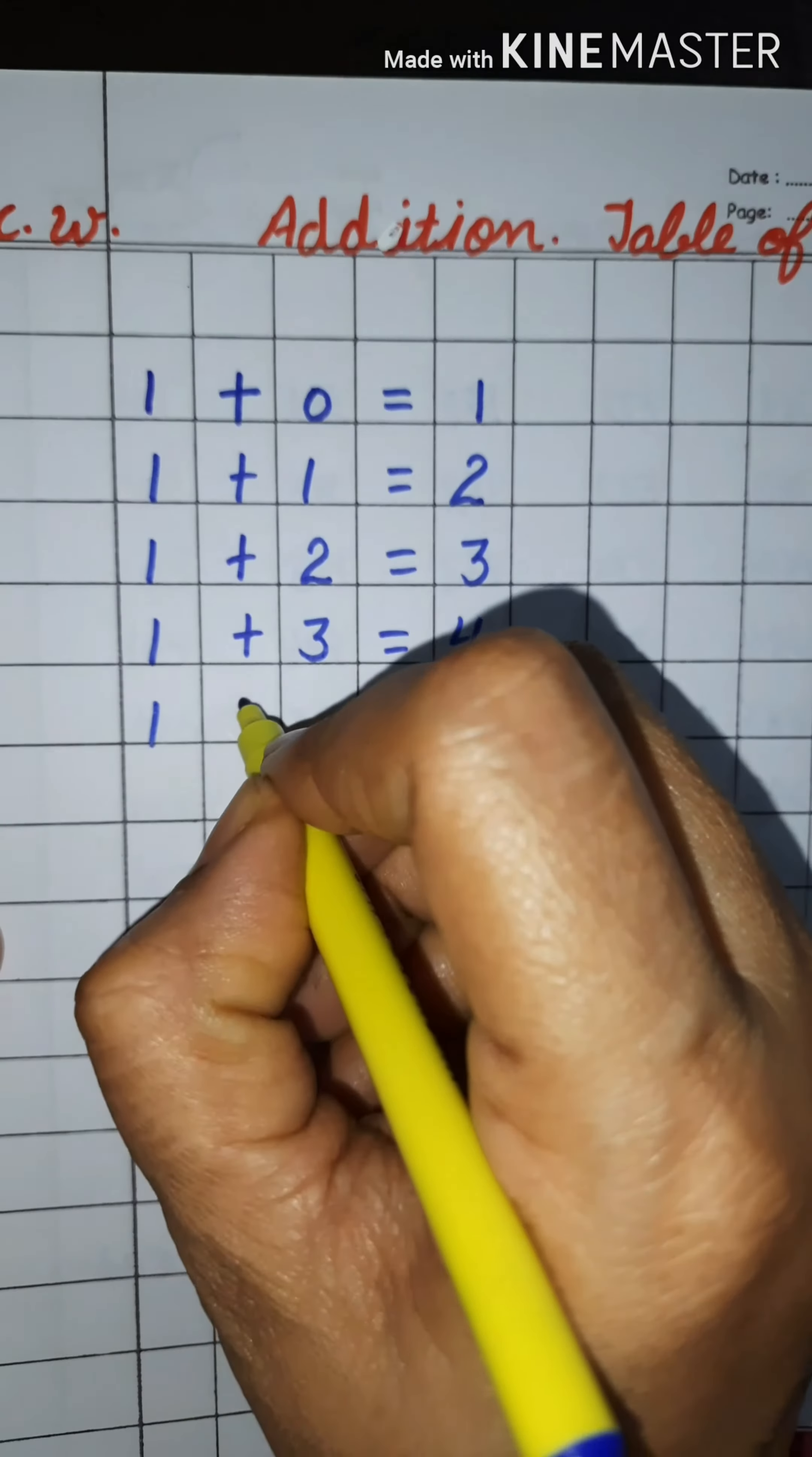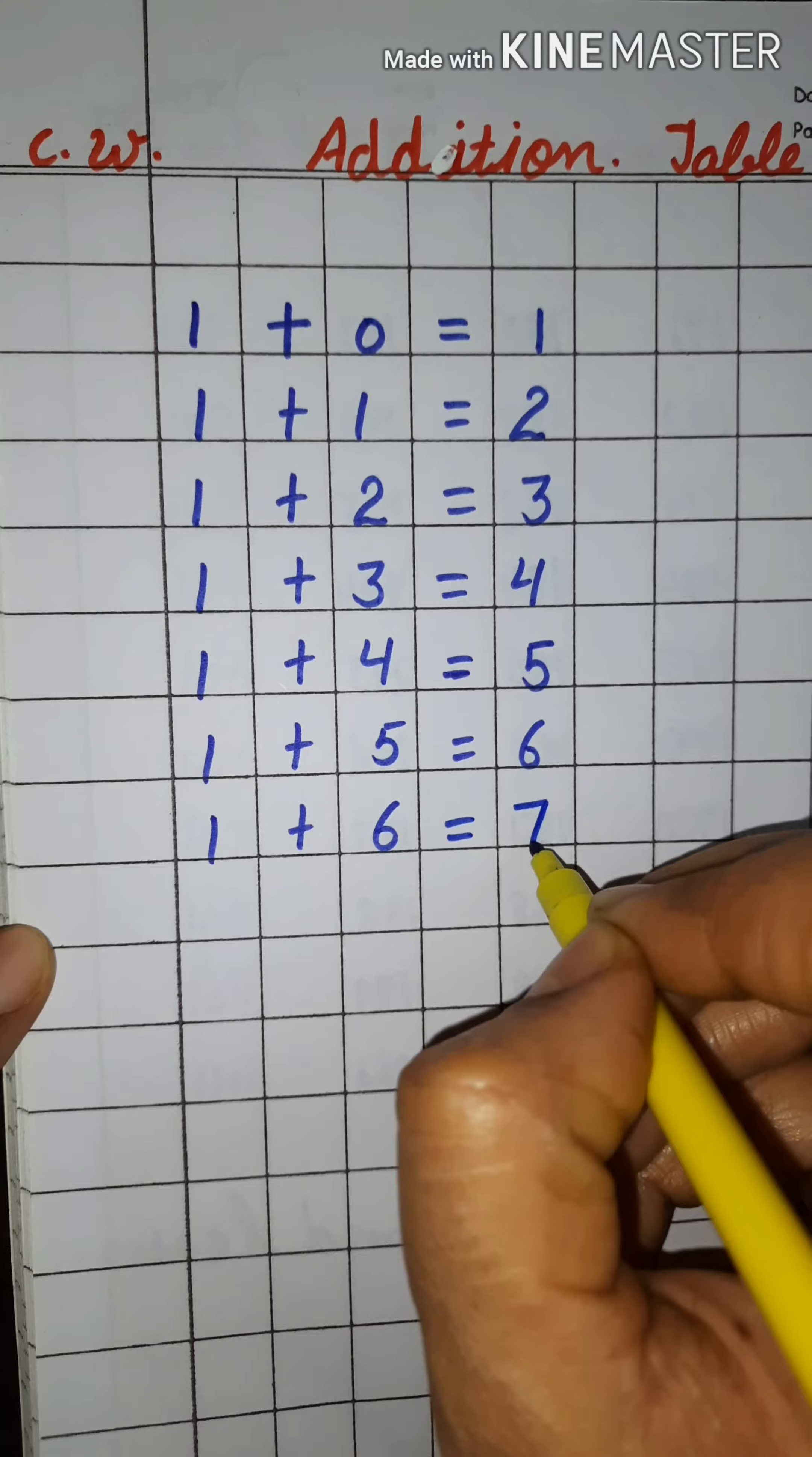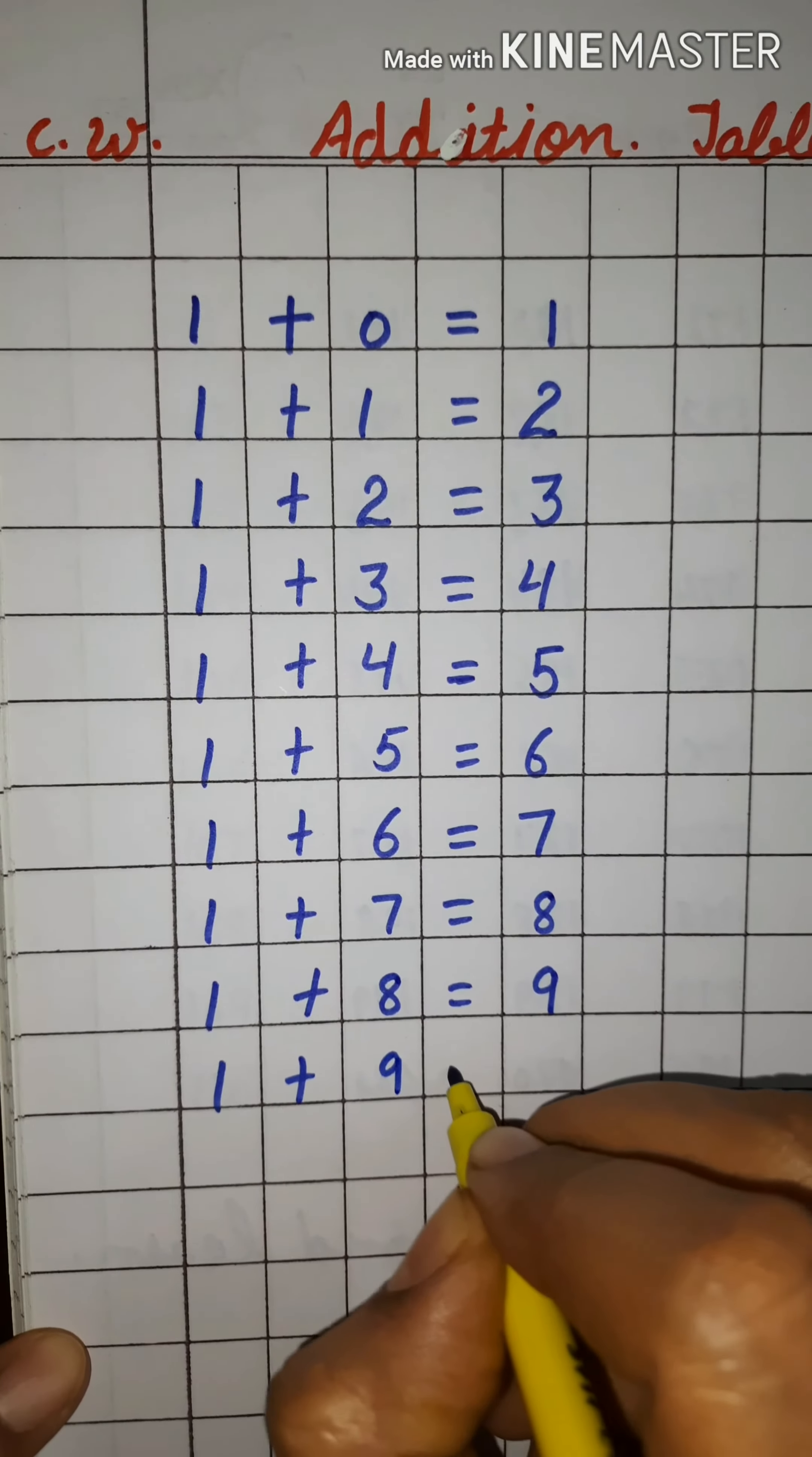One plus four is equal to five. One plus five is equal to six. One plus six is equal to seven. One plus seven is equal to eight. One plus eight is equal to nine. One plus nine is equal to ten.